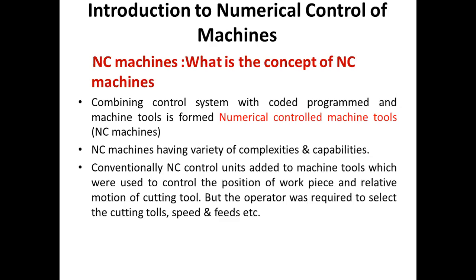Combining the control system with a coded program and machine tools forms numerical controlled machine tools, called NC machines. These machines have a variety of complexities and capabilities. The programming used at that time was slightly complicated, and there was much material waste compared to CNC machines, because they were using magnetic tapes, punch tapes, and punch cards. Conventionally, the NC control unit added to machine tools was used to control the position of the work piece and the relative motion of the cutting tool.